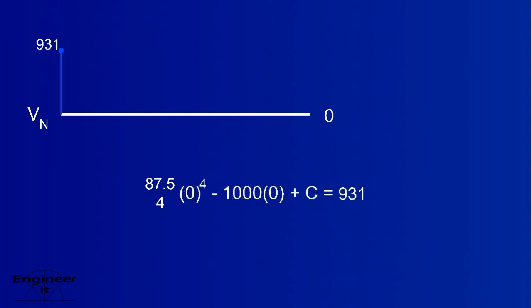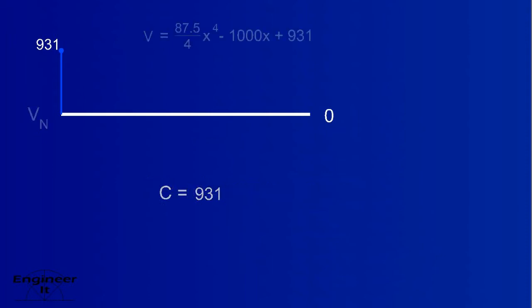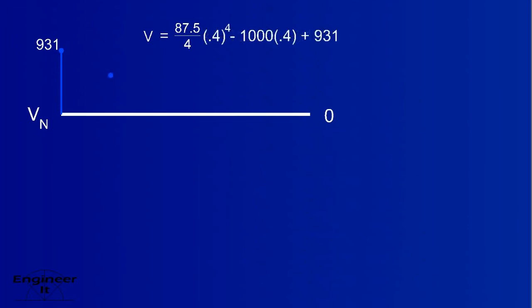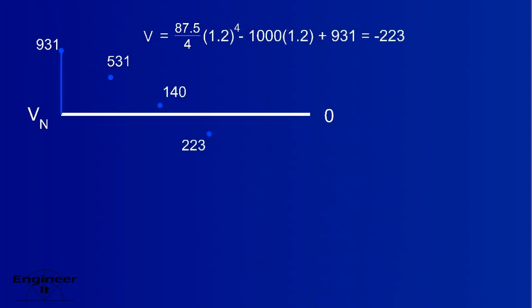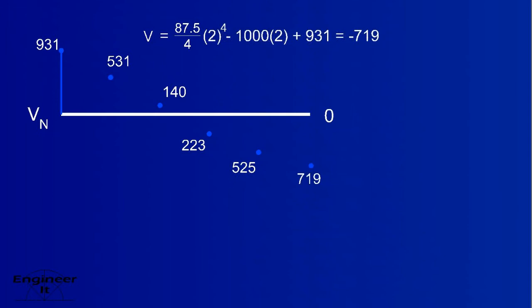We know that when x equals 0, the shear is equal to 931. So we simply solve for c. In order to draw this curve, we'll need to plot some points — five equally divided points should create an accurate curve. Use the shear equation. Remember, the other side of the member was supposed to have a negative shear, and it did.